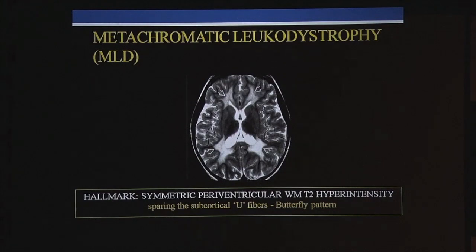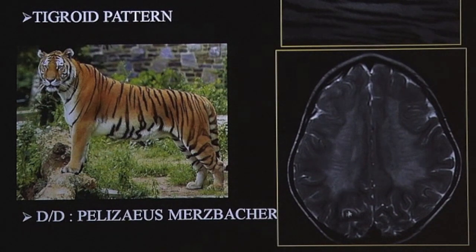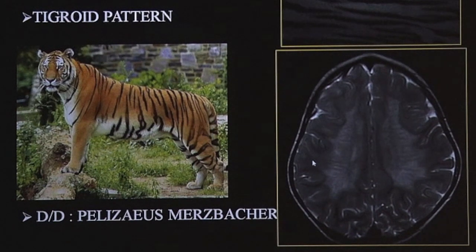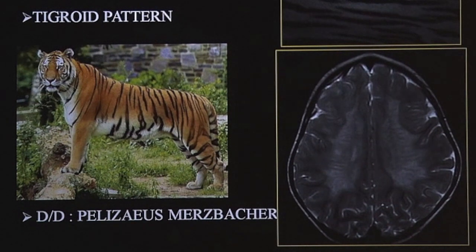As it progresses further, the lesions become conglomerate and you have lines of grey in between the affected white matter, giving rise to the tigroid pattern. This happens because the white matter adjoining the venules, which move from periphery to center towards the central venous drainage system, retains some protection. White matter around these venules does not get affected and remains grey, while white matter away from venules gets affected and becomes white, producing the tigroid pattern. Note that the tigroid pattern is also seen in Pelizaeus-Merzbacher, but there it is seen in subcortical U fibers and not in the periventricular region.